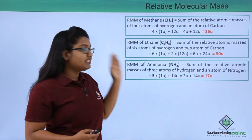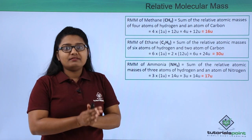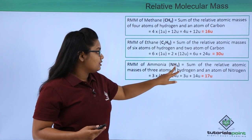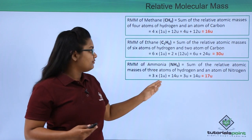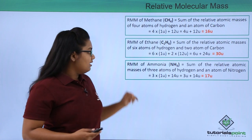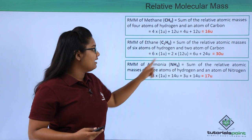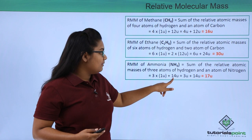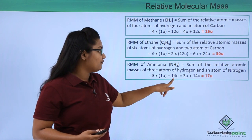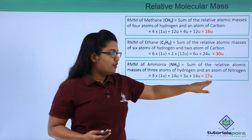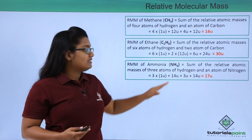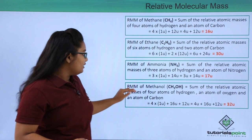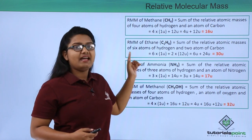An ammonia molecule with the formula NH₃ has one nitrogen atom and three hydrogen atoms. To find its relative molecular mass, we sum 3 × 1u for hydrogen and 14u for nitrogen: 3u + 14u = 17u. Therefore, the relative molecular mass of an ammonia molecule is 17u.